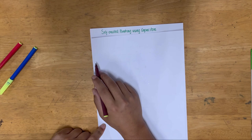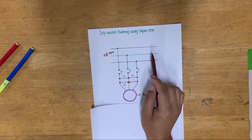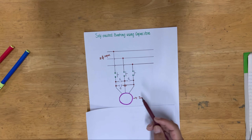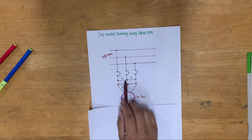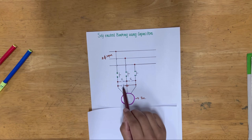Today we will be discussing self-excited braking using capacitors and the circuit diagram for this slide, where we have a three-phase supply and an induction motor. A capacitor is being permanently connected between two phases, another capacitor is connected between two other phases, and the last capacitor is connected between the remaining phases.